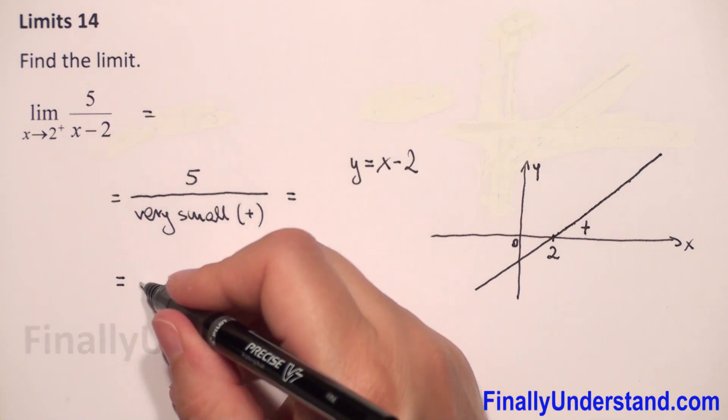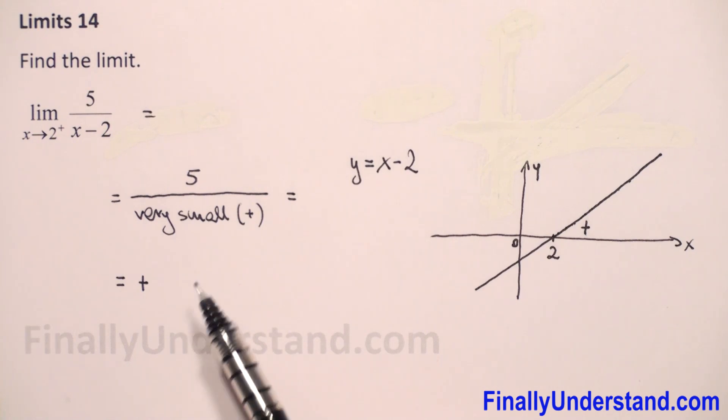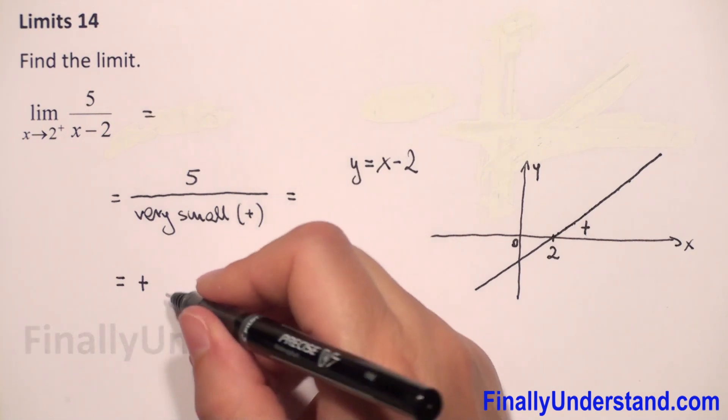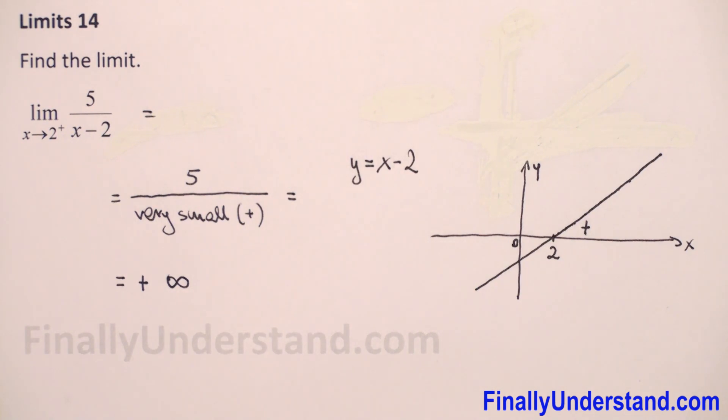Positive over positive gives us positive, and 5 divided by a very small number gives us a large number. So it will be infinity. This is my solution.